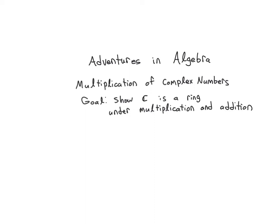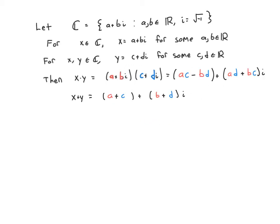Hello. In this video, we are going to show that the complex numbers form an example of a ring with respect to multiplication and addition. As a reminder, the complex numbers are numbers of the form a plus bi, where a and b are real numbers, and i is the square root of negative one.